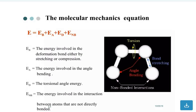The molecular mechanics equation: E is equal to E_b plus E_a plus E_t plus E_nb. What does it mean? The energy involved in the deformation of bonds, either by stretching or compression. The energy involved in angle bending. Torsional angle energy. And the energy involved in the interaction between atoms that are not directly bonded.